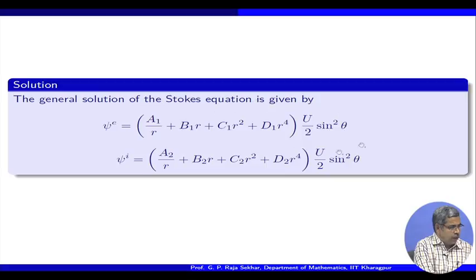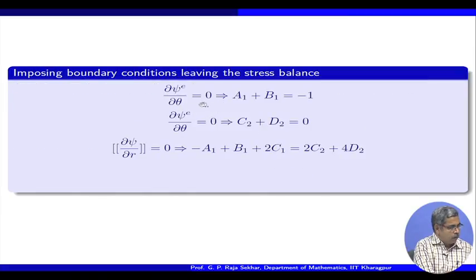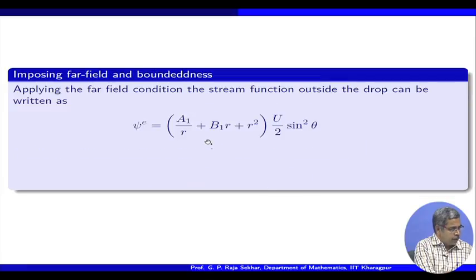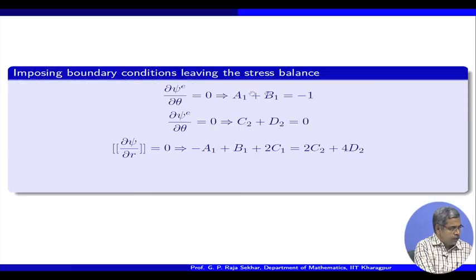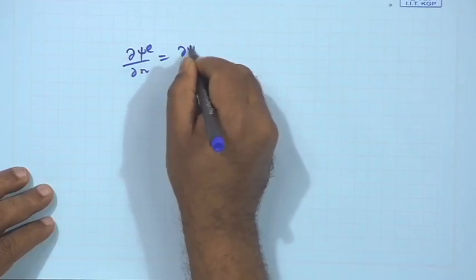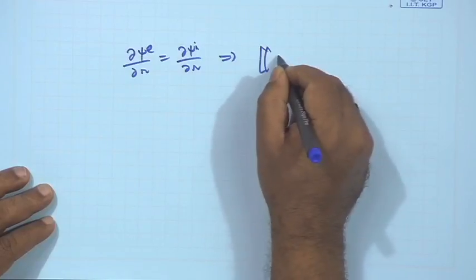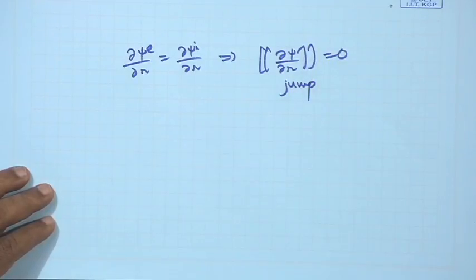The additional conditions are: interior flow is bounded and far-field condition. We are exactly in the same scenario as the previous case of viscous flow past a liquid drop. The additional thing is that the temperature will give the corresponding stresses a jump, and that jump is quantified as the gradient of the temperature. As before, this is the general solution for N equal to 1 case. Applying far-field arguments, we get the reduced solution. The normal velocity exterior is zero, normal velocity interior, and we write the tangential stress as a jump notation.